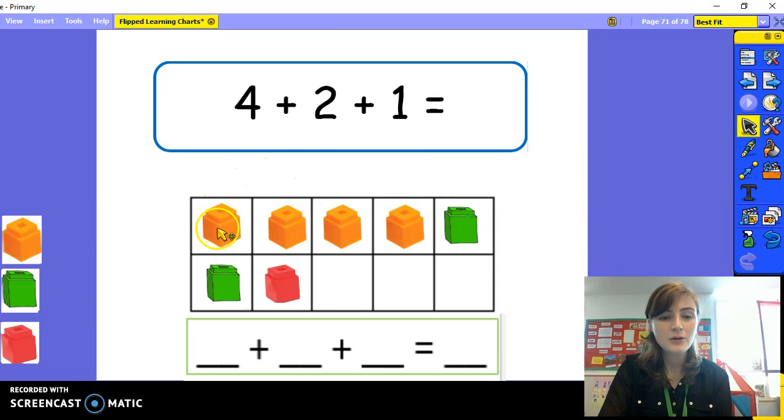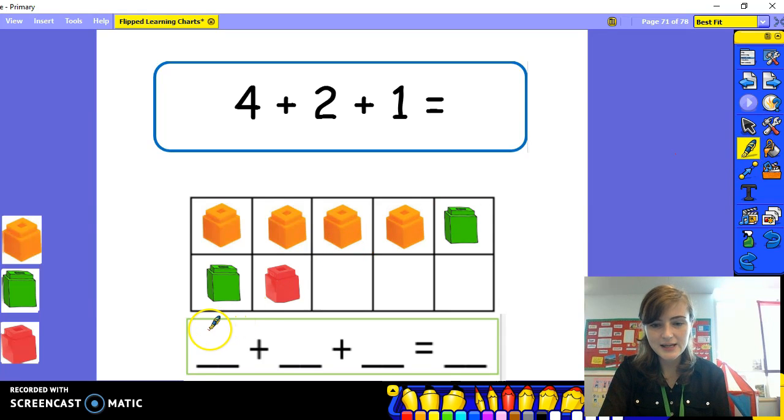Can you help me count? Let's count. One, two, three, four, five, six, seven. Four plus two plus one equals seven. Let's write that in our number sentence. Four plus means we're adding. Our numbers are getting bigger. Four plus two plus one equals seven. Well done. That was some really good adding.